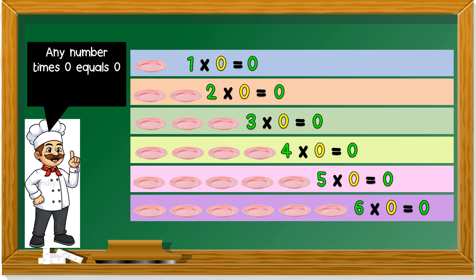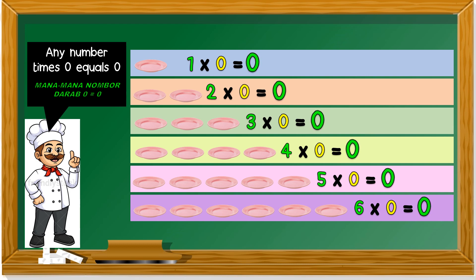Any number that times zero equals to zero. Mana-mana nombor darab dengan sifar ataupun kosong sama dengan kosong. So if we get 50 times zero, we still get zero. 80 times zero, we still get zero. As long as you times zero — darab dengan kosong, darab dengan sifar — sama dengan sifar.